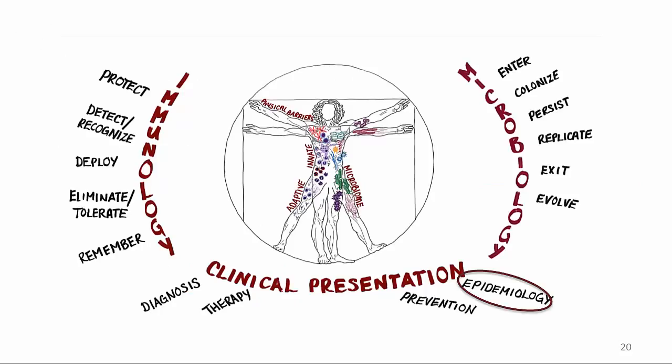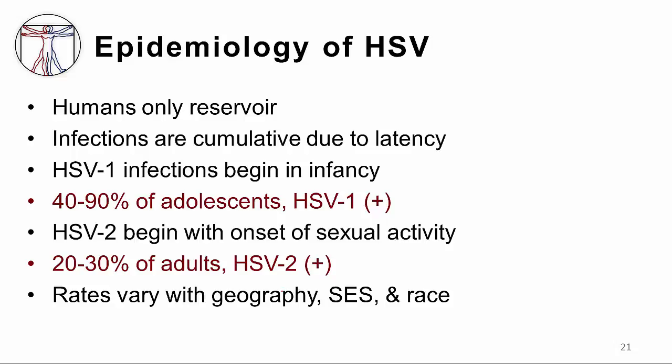Understanding this cycle allows us to end with some points about the epidemiology of herpes infections. Herpes simplex 1 and 2 only occur in humans — the only reservoir. Because infections once acquired are always with a person, the percentage of the population infected is cumulative. HSV-1 infections typically begin in early infancy, often with oral infections, and by adolescence 40 to 90 percent are infected. HSV-2, because it primarily spreads through sexual contact, starts later in life, and by adulthood 20 to 30 percent of the population are infected. Rates of infection vary to some degree according to geography, socioeconomic status, and race.